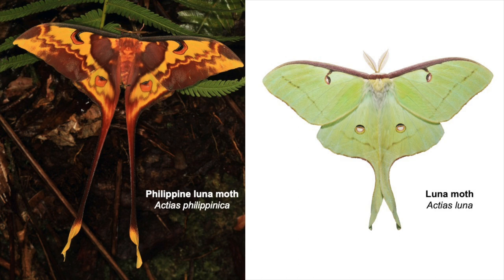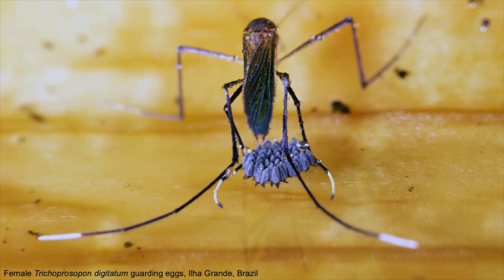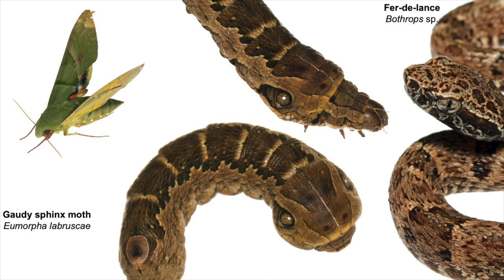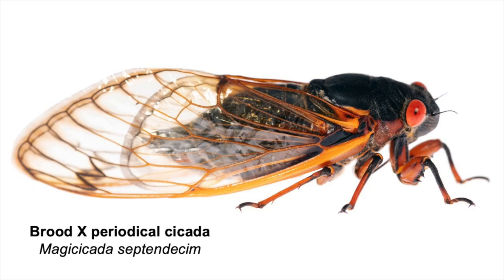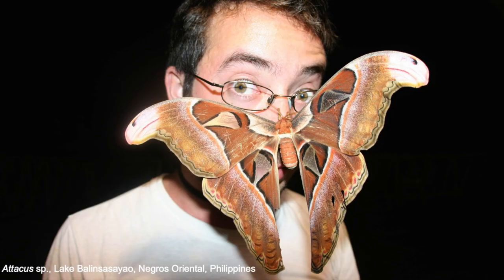For a long time we marveled at the tails of luna moths, but only over the past few years have we learned these tails serve as a decoy to deflect bat attacks away from the body of the moth. There are also mosquitoes that exhibit parental care, brooding their eggs to keep them from splashing out of water-holding containers. We have caterpillars that are exquisite mimics of venomous snakes, fireflies that flash in synchrony in specific trees, and cicadas that spend 17 years underground — counting winter-spring transitions — then emerge in near-synchrony on that 17th year.